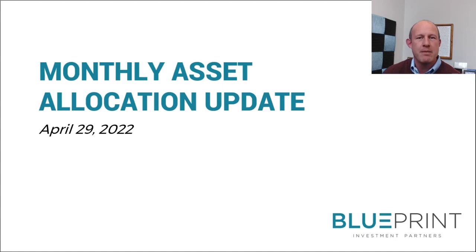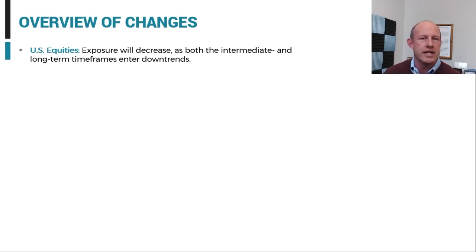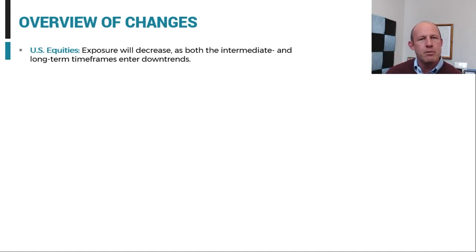As card-carrying trend followers, the timeframes that we utilize to gauge risk have shown that risk has increased substantially in U.S. equities, which means downtrends have emerged in U.S. stocks both in the intermediate term and the long term. For our strategies, we will be decreasing U.S. equity risk — not to minimum levels, but certainly in the bottom quartile, near minimum levels.